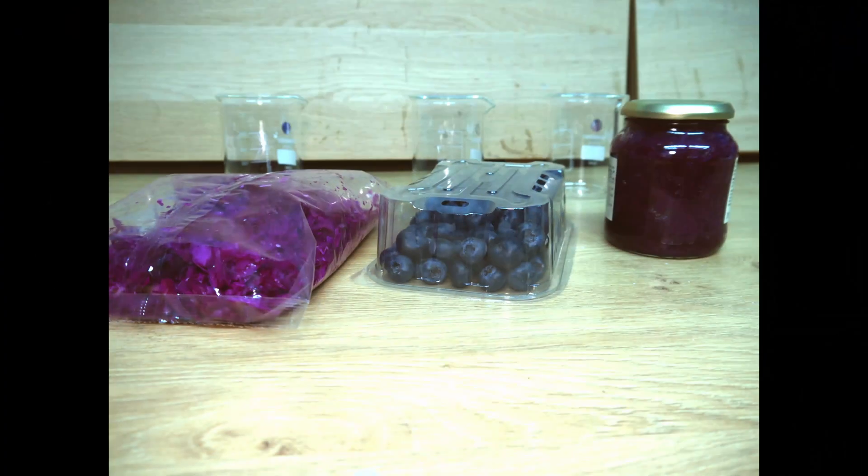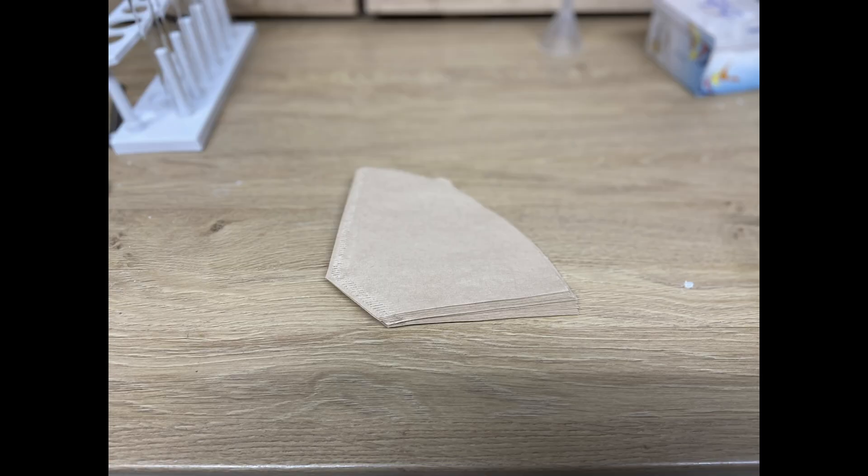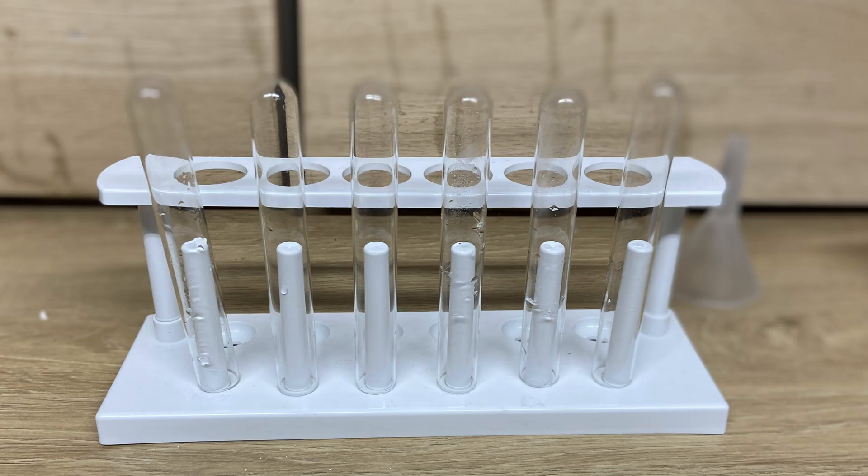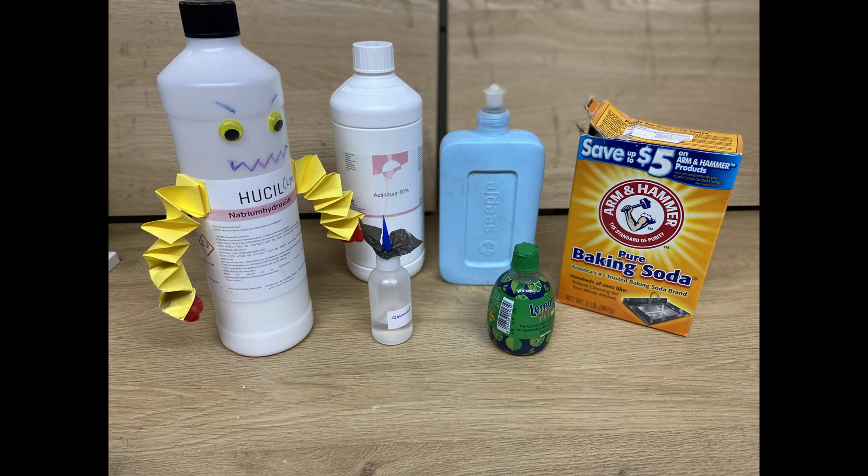Now for this experiment you will need red cabbage, blueberries, processed red cabbage, water, coffee filter, a bunch of test tubes, and some liquids that are acidic or base. I used lemon juice, 80% vinegar, ammonia, liquid soap, sodium hydroxide, and baking soda. But these are just random things that I wanted to test. You can do whatever you like.